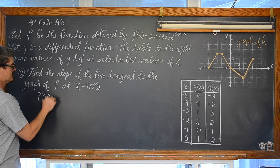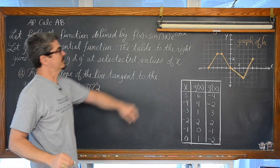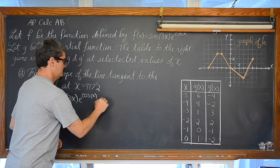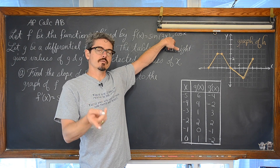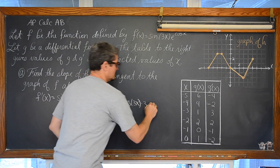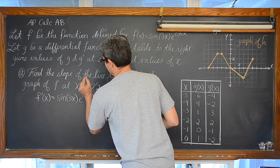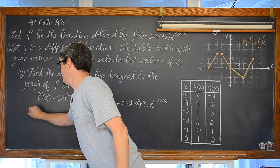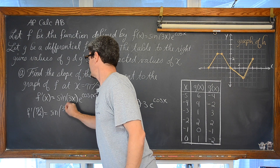So f'(x) is equal to the first times the derivative of the second. We have sin(3x) times the derivative of e^(cos x), which is e^(cos x) times the derivative of cosine, which is times negative sine of x, plus the second times the derivative of the first. The derivative of sine is cosine — finish that chain rule — times 3 times e^(cos x). We are being asked for the numerical value, so we want f'(π/2).